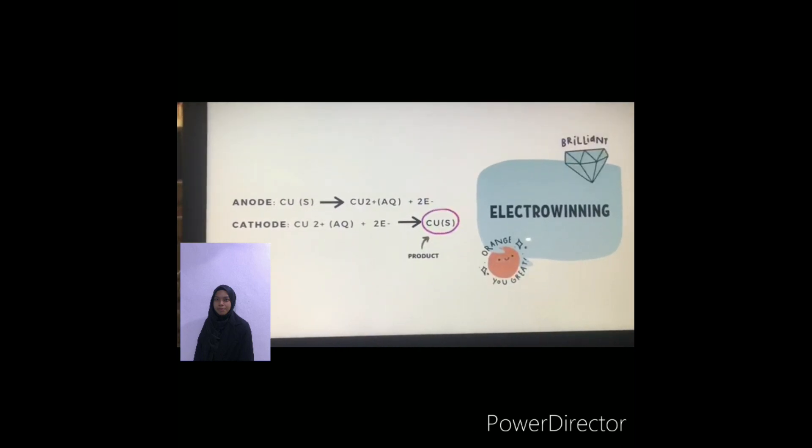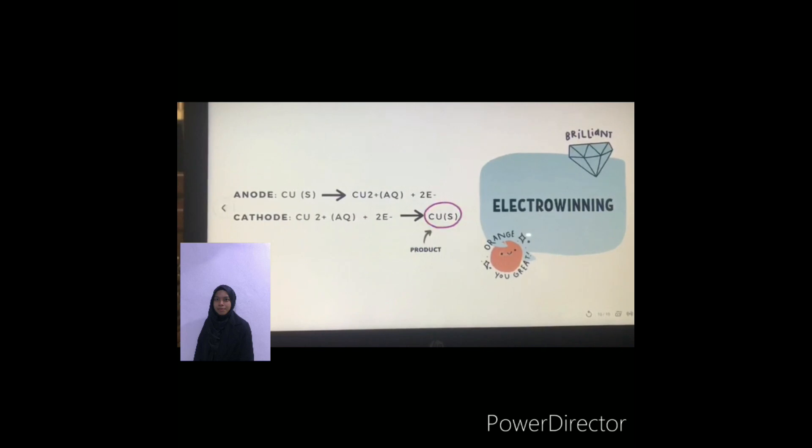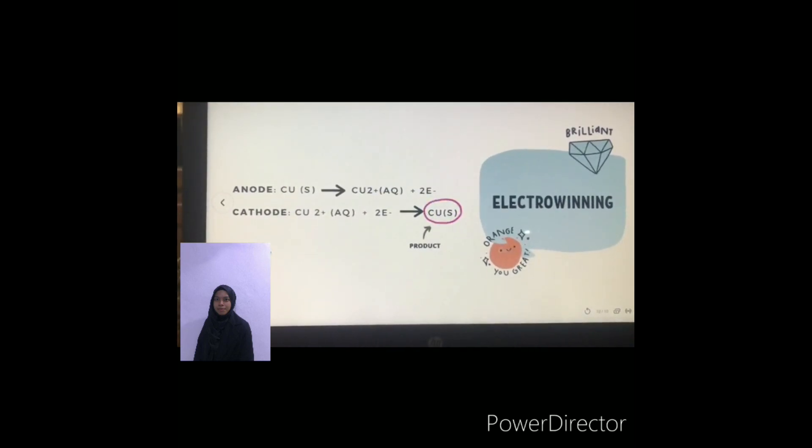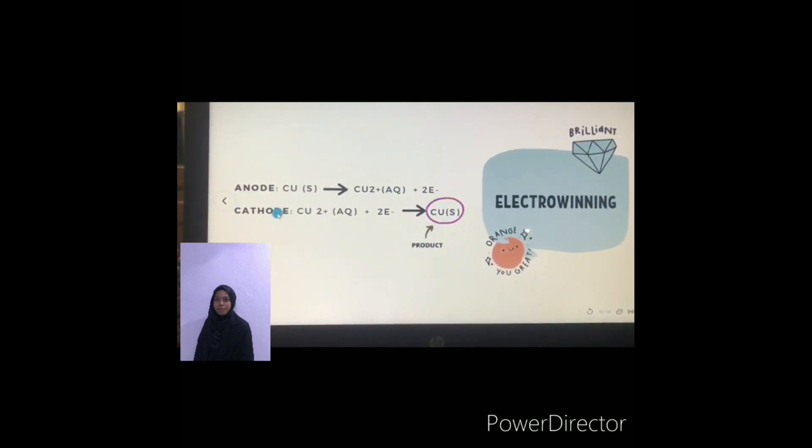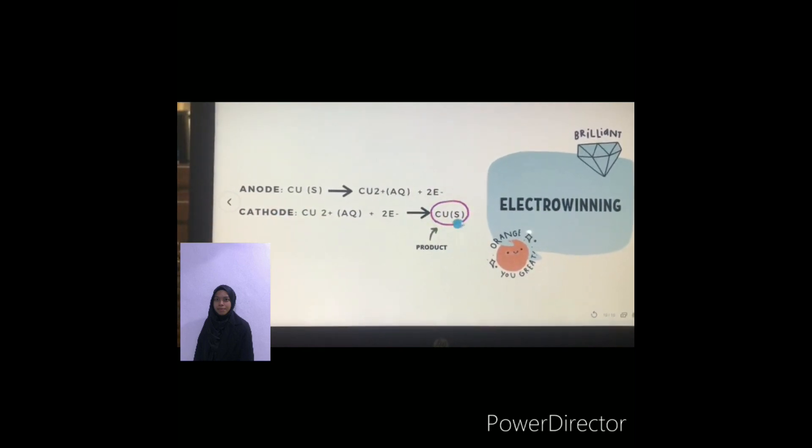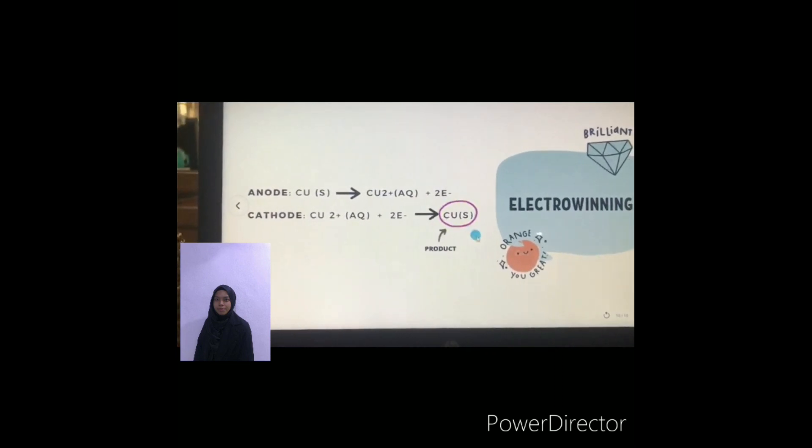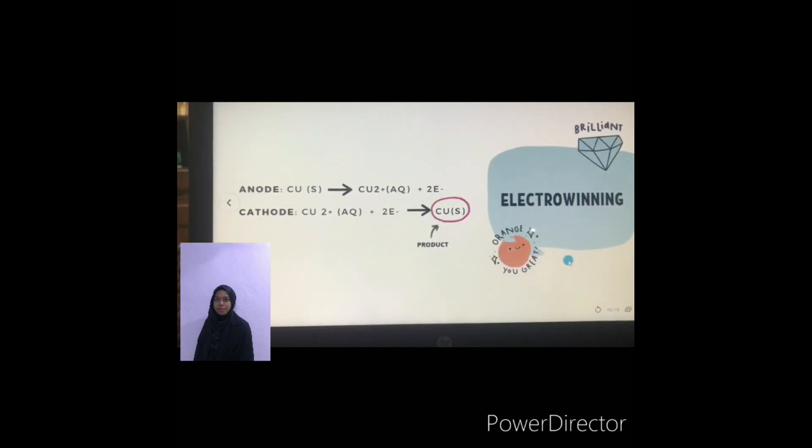Electrowinning is used for extraction of the component. In the electrowinning, there are two electrodes and a cathode. The production of copper liquid is on the cathode. Here is the reaction: they produce copper in solid phase. That's all for the reaction in this ecosystem. Thank you.